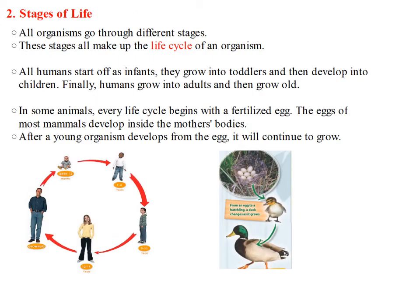Now let's move to the stages of life. All organisms go through different stages in their lives. These stages all make up the life cycle of an organism. Humans, for example, start off as infants. They grow into toddlers and then develop into children. Finally, humans grow into adults and then grow old. And this is the life cycle of all humans.